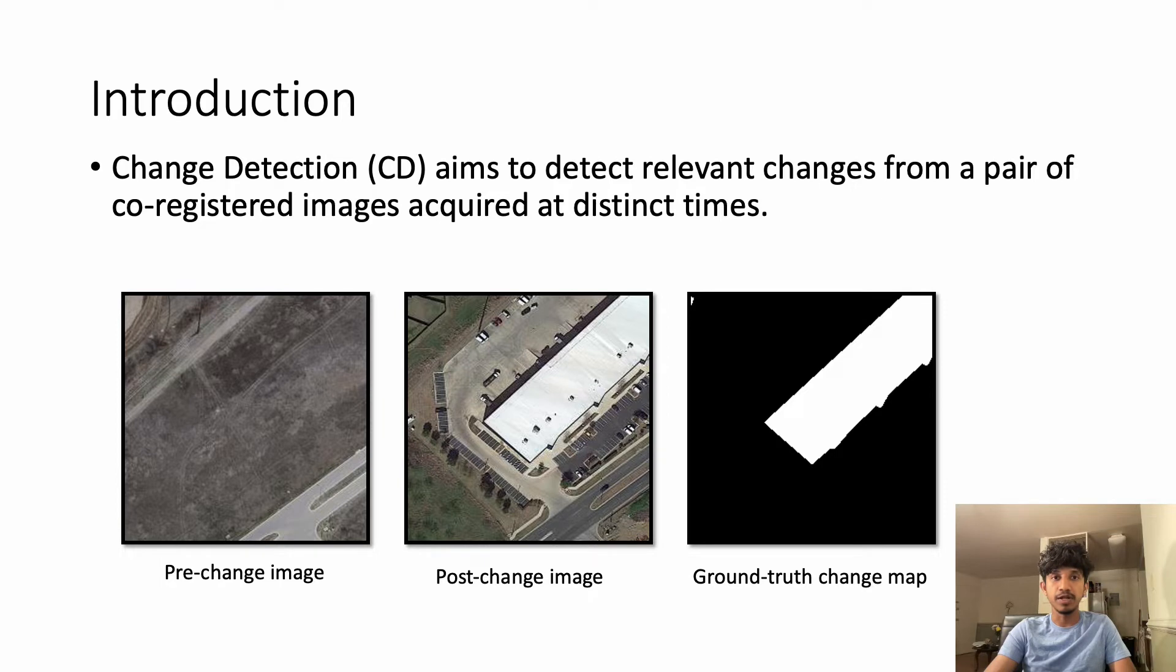Change detection aims to detect relevant changes from a pair of co-registered images acquired at distinct times. The definition of change may vary depending on the application. The changes in man-made facilities, vegetation changes, and environmental changes are usually regarded as relevant changes.